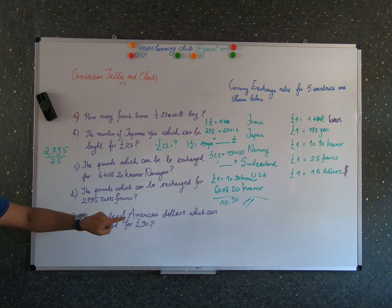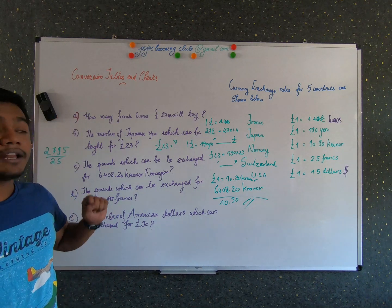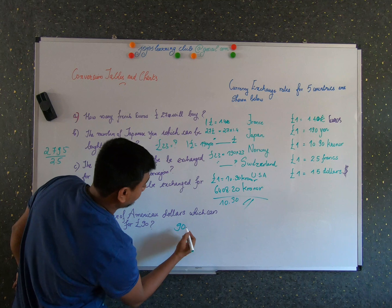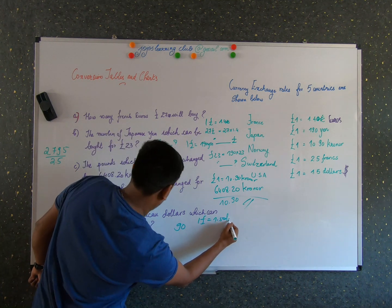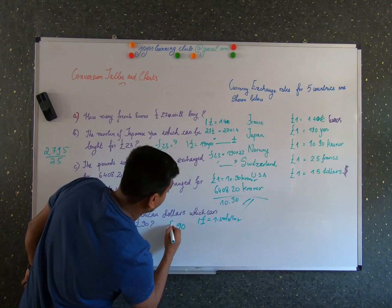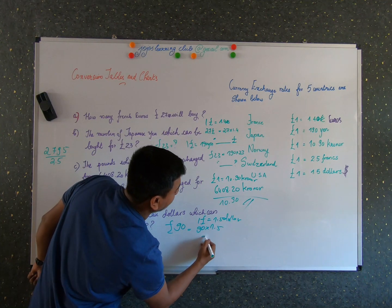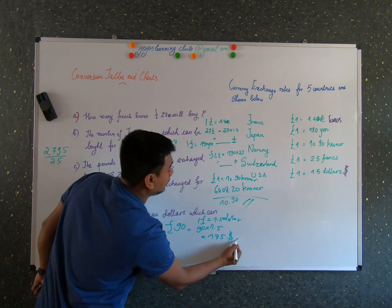And for the number of American dollars which can be purchased for 90 pounds, to find the number of dollars what you have to do, you have to just multiply it by. So we know that one pound is 1.5 dollars. So now we have 90 pounds. So what you have to do, 90 into 1.5 which is nothing but 90 plus 45. That is 135 dollars.